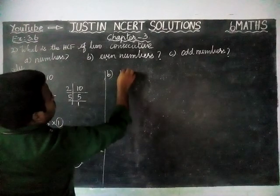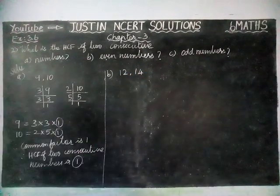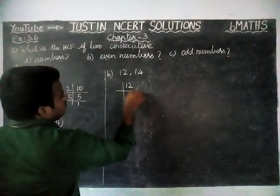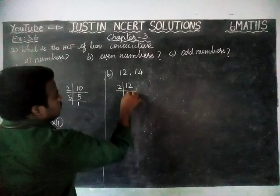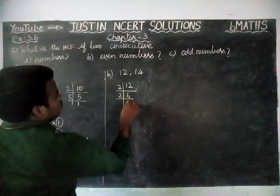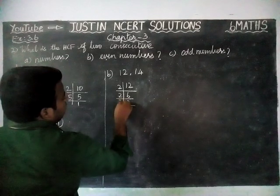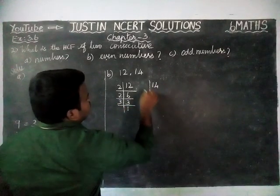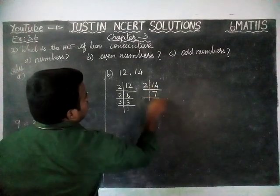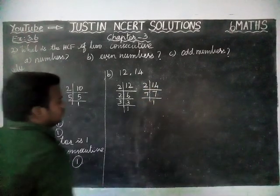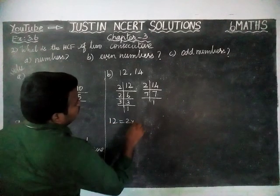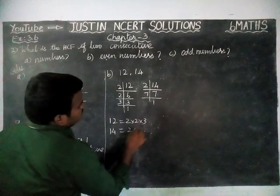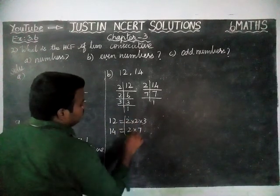Next, Part B — 2 consecutive even numbers. We are going to take numbers 12 and 14. For 12, we divide by 2 to get 6, again by 2 to get 3, then by 3. So factors of 12 are 2 × 2 × 3. For 14, we divide by 2 — 7 twos are 14, then by 7. So factors of 14 are 2 × 7. The common factor is 2.